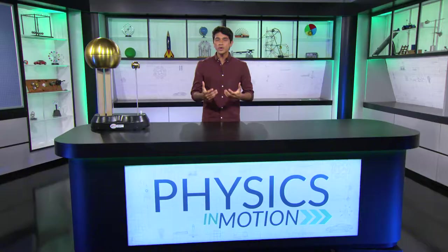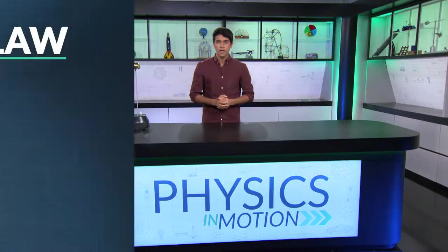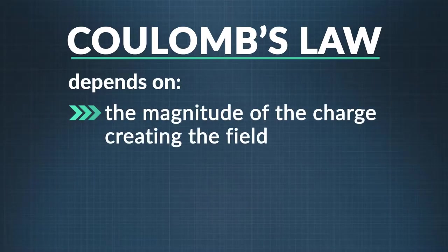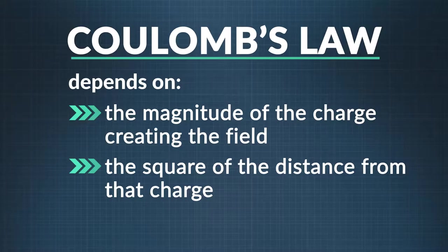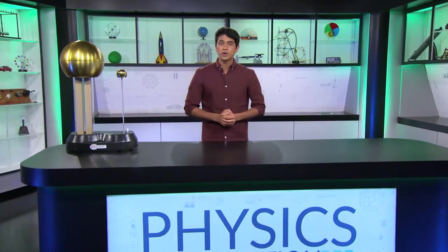It turns out that the strength of the electric field depends on two things that Coulomb figured out. The first is the magnitude of the charge creating the field, and the second is the square of the distance from that charge. The greater the charge, the stronger the force. And the farther apart the charges, the weaker the force. But no matter how far apart they are, the field still exists. Scientists believe it goes on forever.